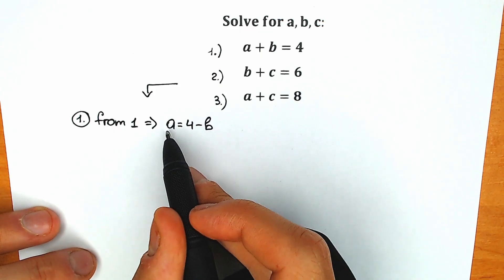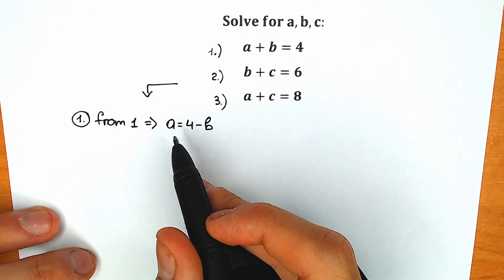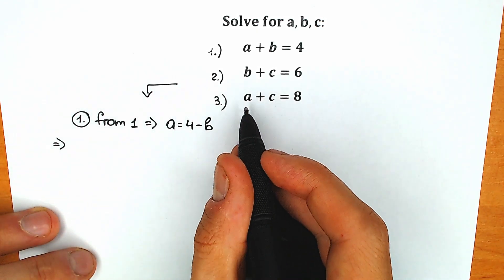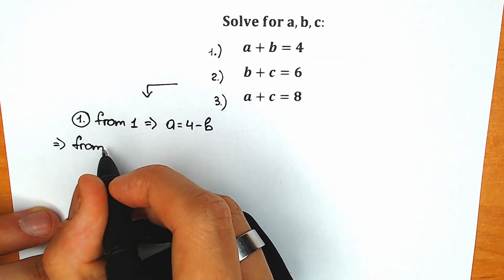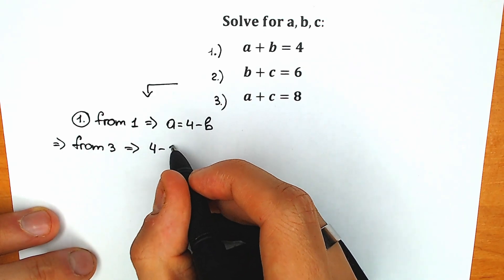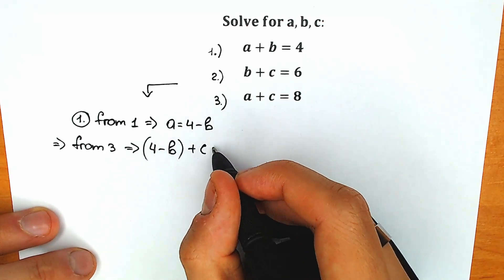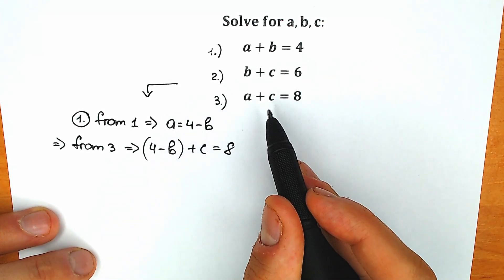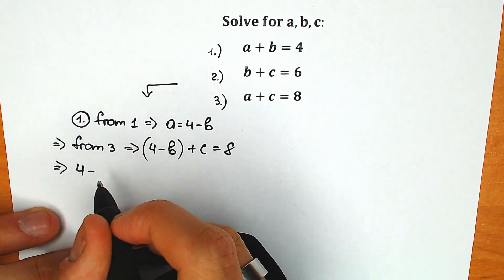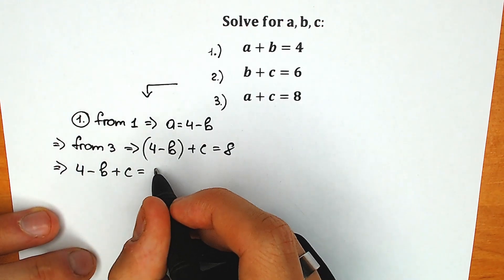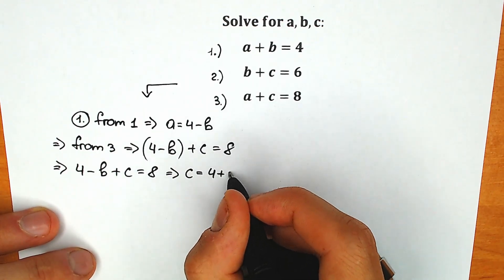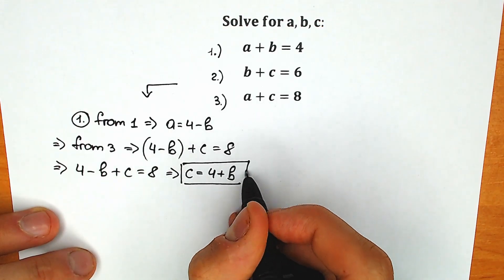Now let's substitute 4 minus b into equation three. Instead of a, we plug in 4 minus b. So from the third equation we have: 4 minus b plus c equals 8. Simplifying, our c is equal to 4 plus b.